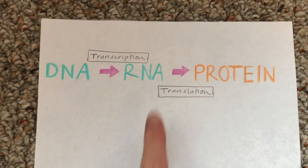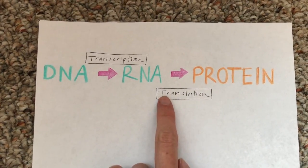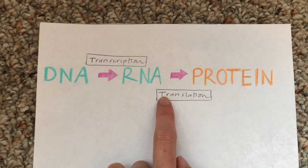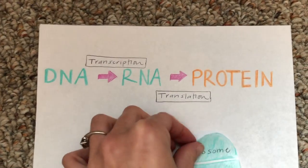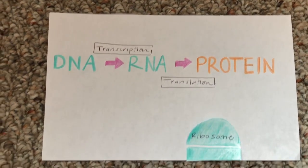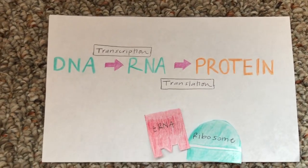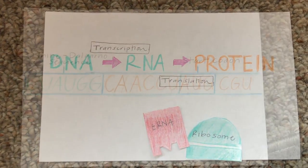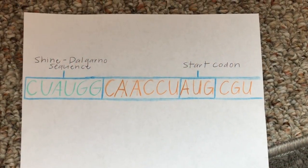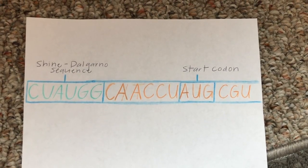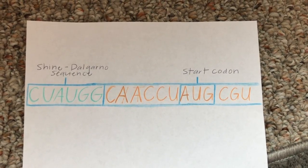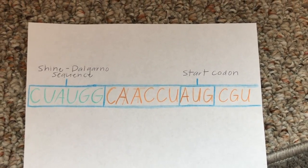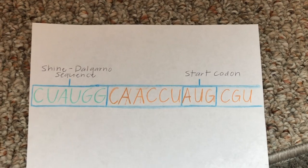In order for an RNA nucleotide sequence to transition to a protein peptide sequence, ribosomes and an adapter molecule must be present. Because there are a limited number of tRNAs compared to the 61 codons that code for amino acids, some amino acids require multiple tRNAs.